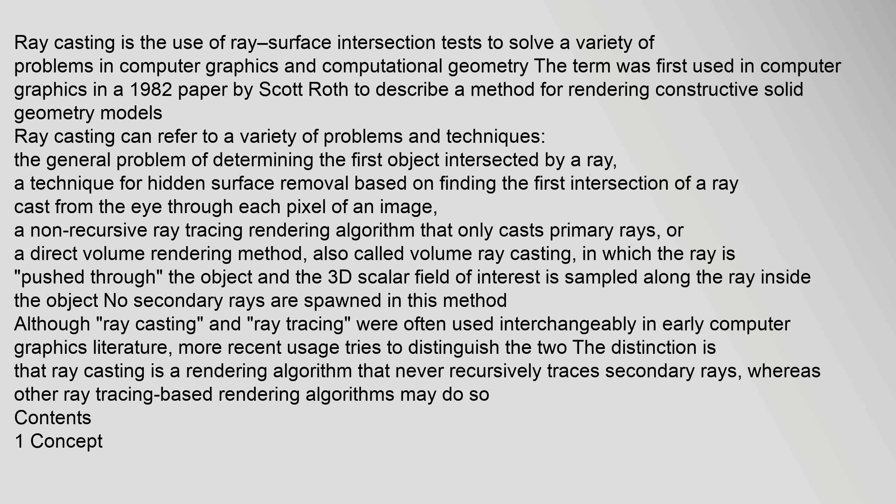Ray casting can refer to a variety of problems and techniques: the general problem of determining the first object intersected by a ray; a technique for hidden surface removal based on finding the first intersection of a ray cast from the eye through each pixel of an image; a non-recursive ray tracing rendering algorithm that only casts primary rays; or a direct volume rendering method, also called volume ray casting, in which the ray is pushed through.